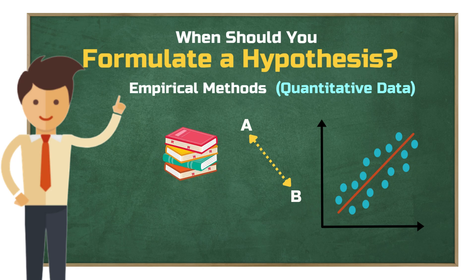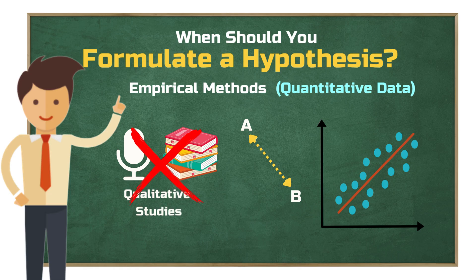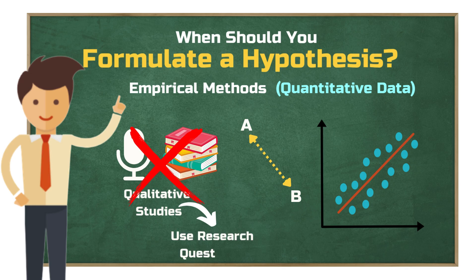However, for literature-based research papers, case studies, or most qualitative studies, hypotheses aren't very common. Because in these studies, you're not trying to test theoretical relationships — you have different research objectives. In those cases, one or two well-defined research questions usually suffice.